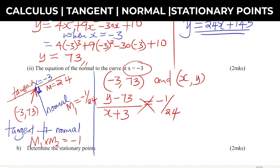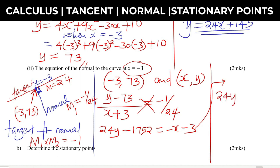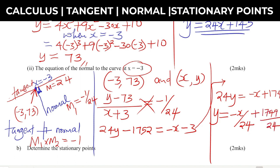We introduce a general point (x, y) on the normal and use the two points to set up the gradient equation: (y - 73) / (x + 3) = -1/24. Cross-multiplying gives 24y - 1752 = -x - 3. Rearranging: 24y equals -x + 1749. So y equals -x/24 plus 1749/24. That is the equation of the normal.